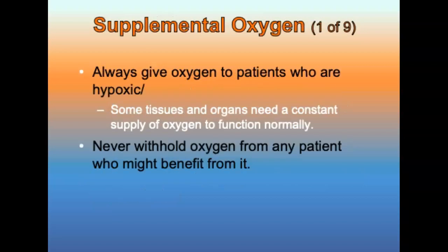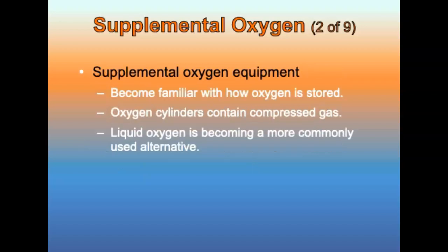Now let's get into supplemental oxygen and devices. Always give supplemental oxygen to hypoxic patients. Some tissues and organs — including the heart, central nervous system, lungs, kidneys, and liver — need a constant supply of oxygen. Never withhold oxygen from any patient who might benefit from it, especially if assisting with ventilations. When ventilating a patient in cardiac or respiratory arrest, use high-concentration supplemental oxygen. Oxygen is usually supplied as compressed gas in green, seamless steel, or aluminum cylinders.